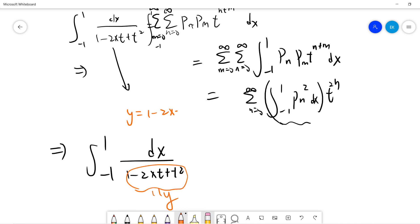So y is this. So dy, remember we integrate with x, so it's minus 2t dx. So it will be 1 over 2t, 1 minus t squared, 1 plus t squared, dy divided by y.